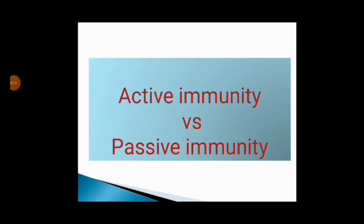Today's topic of discussion is active immunity versus passive immunity. Immunity is the ability of the body to defend against disease-causing organisms. Every day our body comes in contact with several pathogens, but only a few result in diseases — this is because of our own defense system, that is our immunity. This immunity is of two types: innate immunity and acquired immunity.